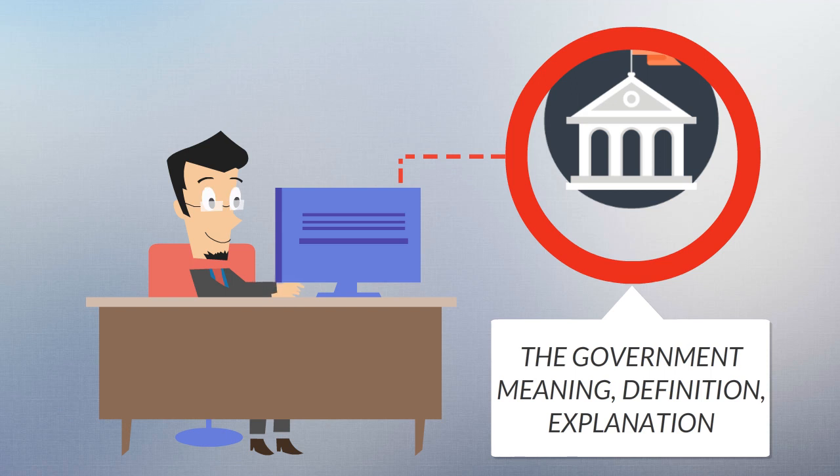Each government has a kind of constitution, a statement of its governing principles and philosophies. Typically the philosophy chosen is some balance between the principle of individual freedom and the idea of absolute state authority tyranny.